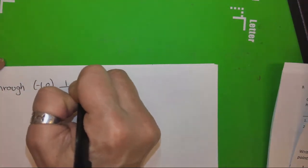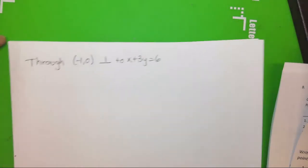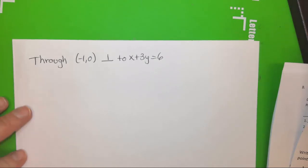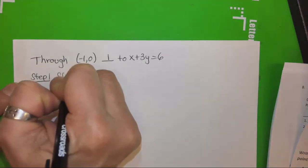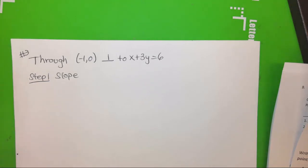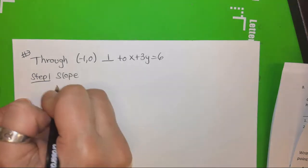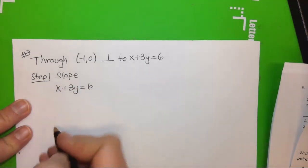So we want it to be perpendicular to x plus 3y equals 6. So, what's your step one? Step one is always what? Slope. So step one. Slope. This is number three at the bottom of page two. So our slope, what are we going to use to find our slope? Right. We need to use the equation and we need to solve to find y so we can get our slope.